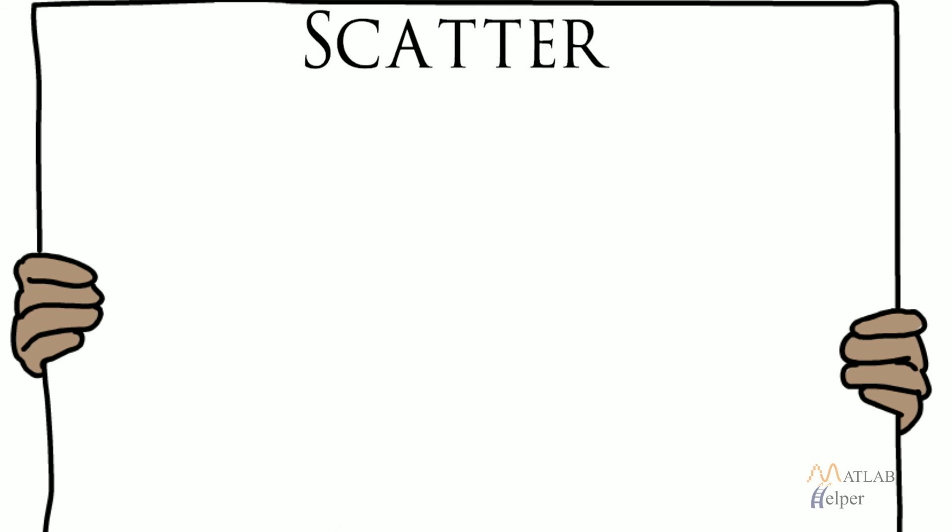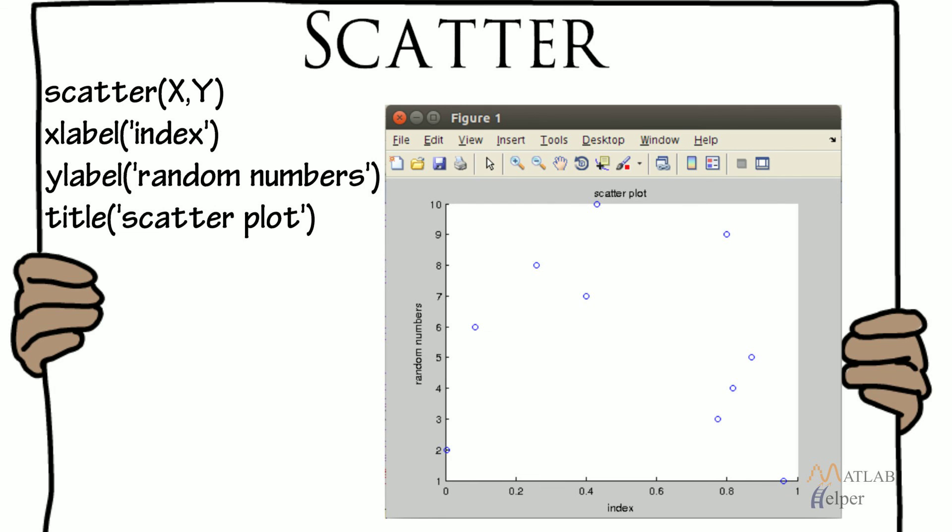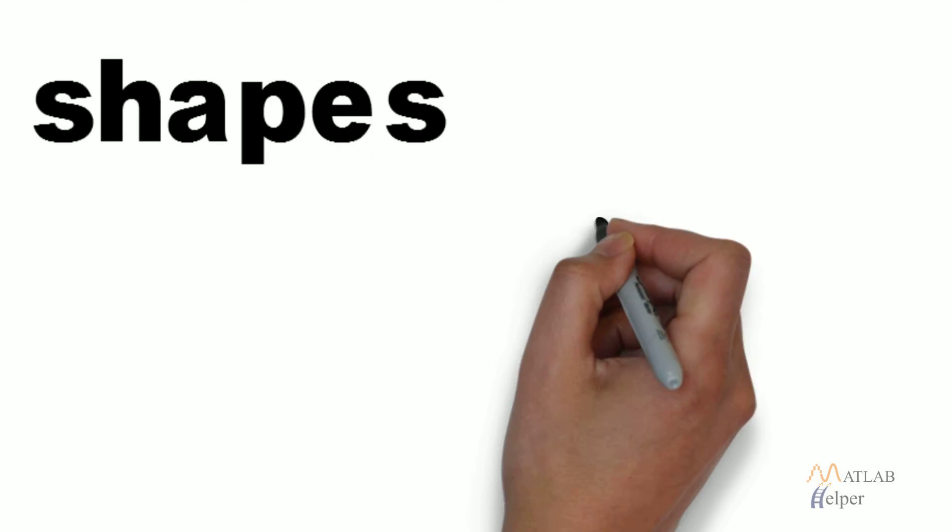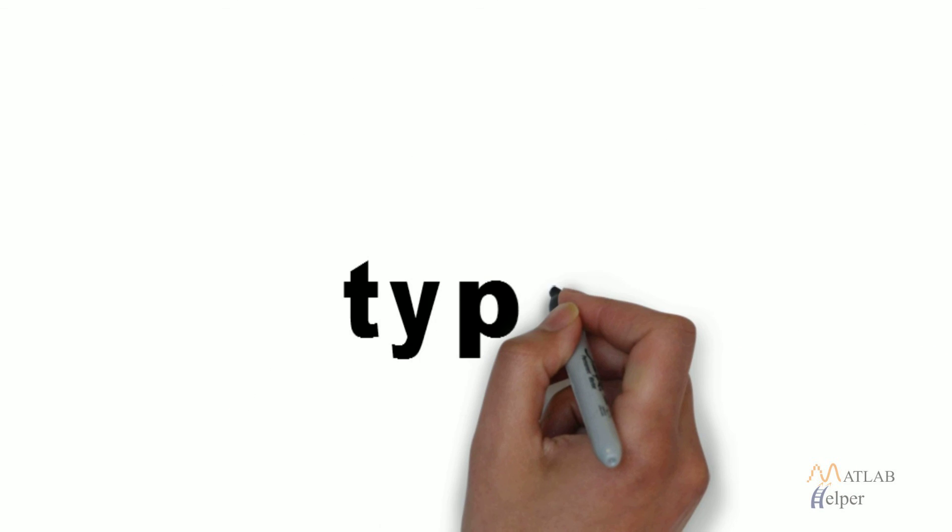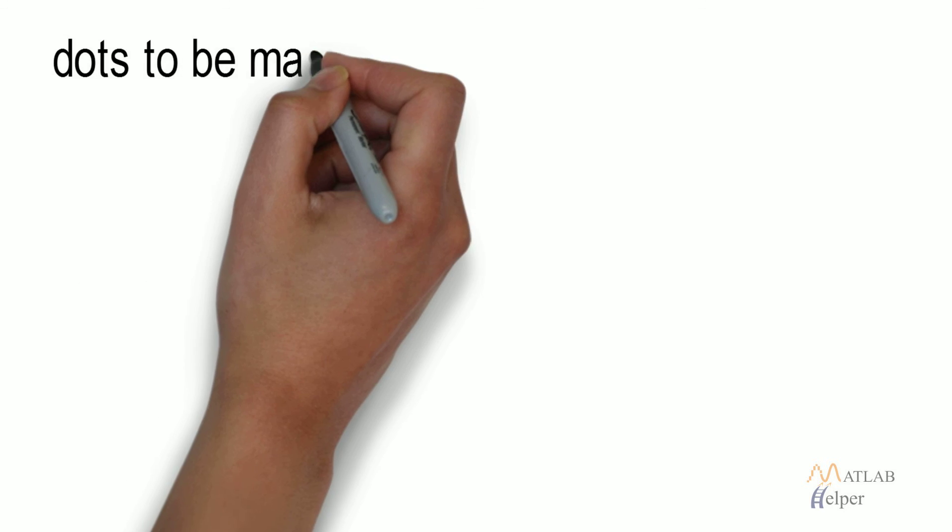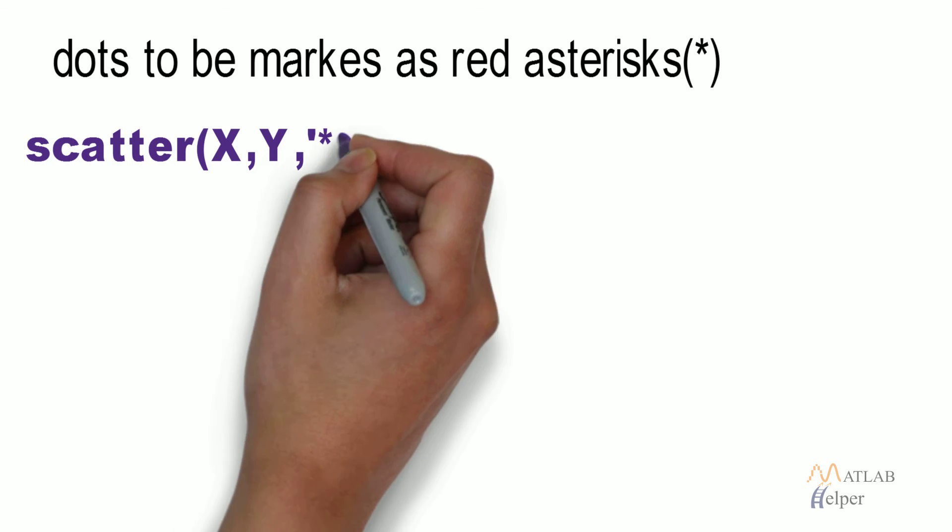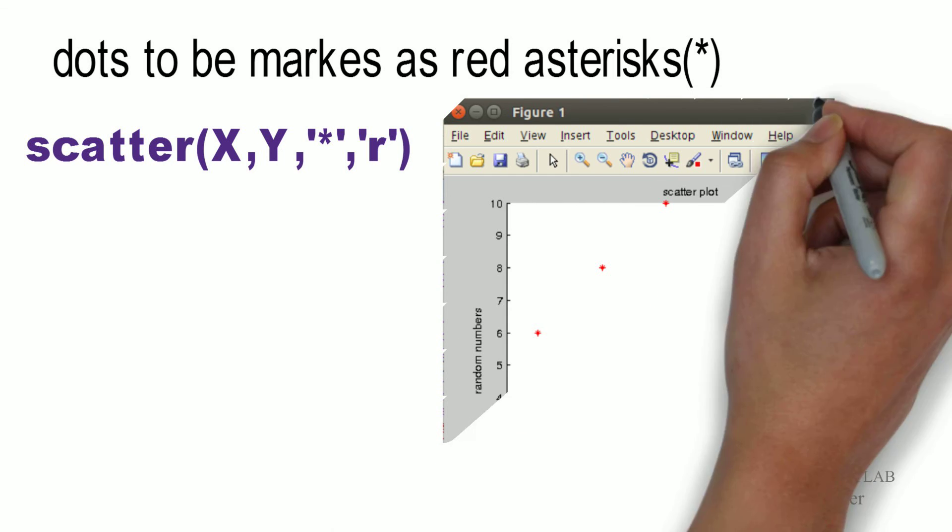Scatter: The function scatter can be used to display data in the form of coordinates formed of x and y matrices. We can also specify different shapes, types, and colors of the dots in the scatter plot with the help of flags. For example, here, if we want the dots to be marked as red asterisks, we can specify the following command.